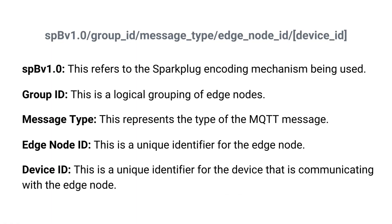MQTT Sparkplug extends this functionality by enhancing MQTT's capabilities and offering guidelines on structuring topics in a universally comprehensible way. The topic structure as mandated by MQTT Sparkplug is as follows. This refers to the Sparkplug encoding mechanism being used. For example, here a reference is made to Sparkplug B encoding, which uses Google Protocol Buffers. The group ID is a logical grouping of edge nodes. It can be used to group together edge nodes that are geographically close or that perform similar functions. The message type represents the type of the MQTT message.